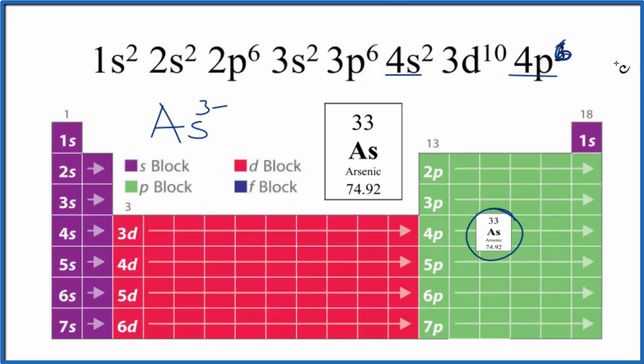So we have the electron configuration for the arsenide ion, and then if we wanted just arsenic we would get rid of those three electrons and we just have As. This is Dr. B with the electron configuration for As and As³⁻. Thanks for watching.